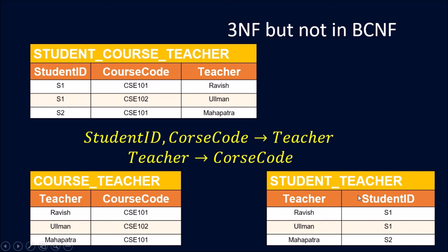To resolve this, we split the table into two parts: teacher and course, and teacher and student ID. One might consider another split like student with course ID, and teacher with course code, but that would violate the basic concept of normalization — after splitting a table, joining the two parts back must return the original table. Keeping that in mind, we split into the two correct tables.